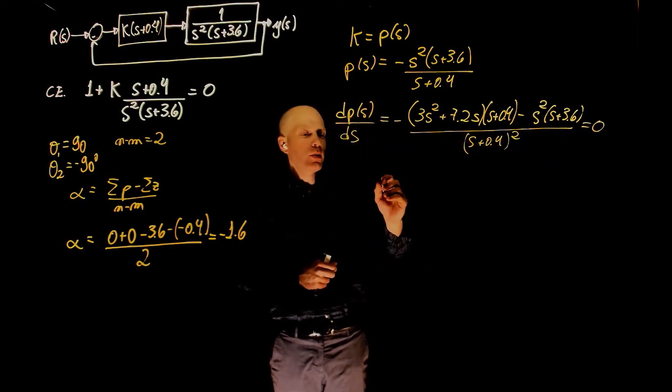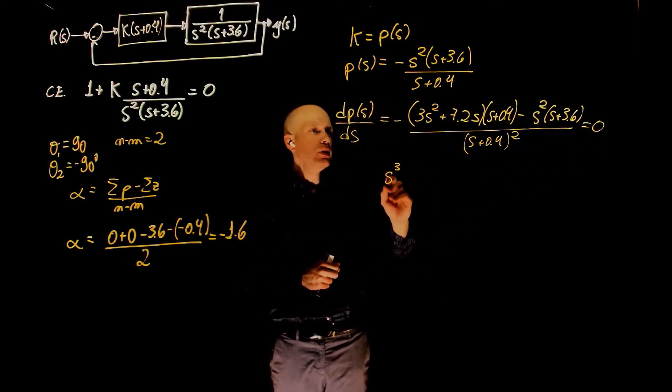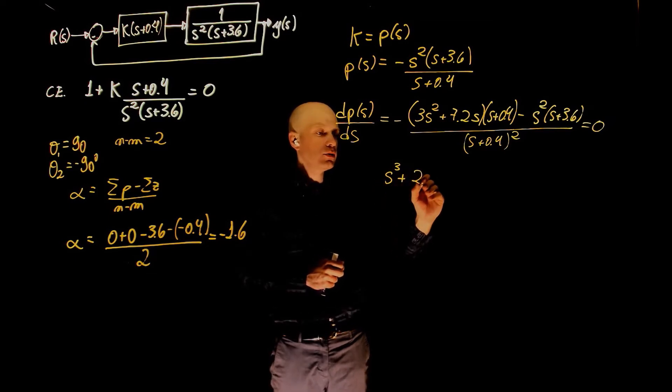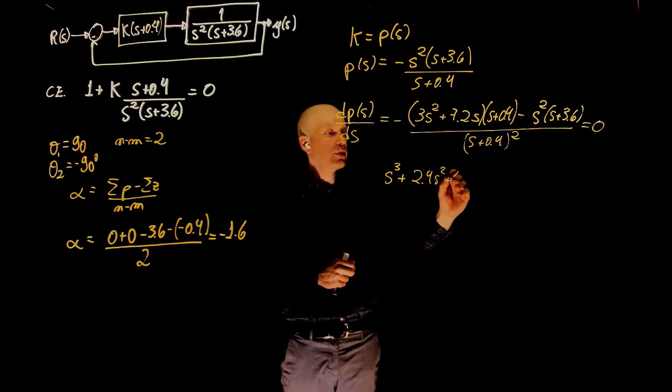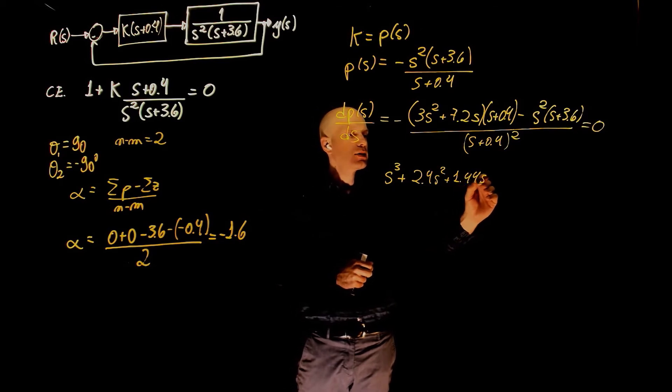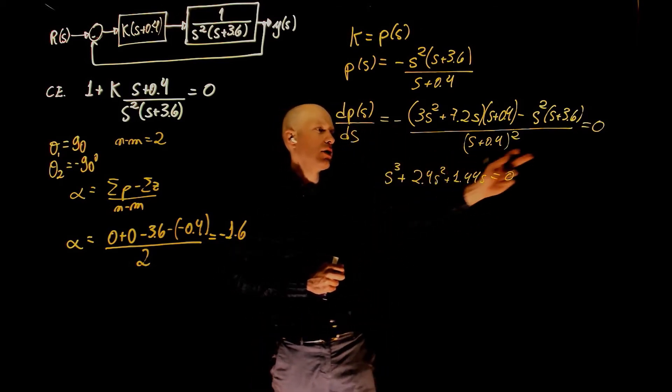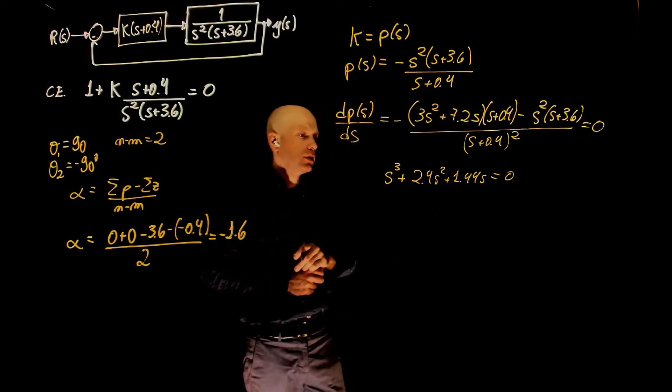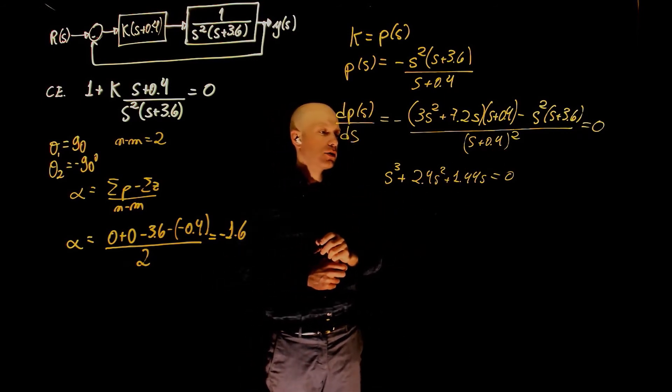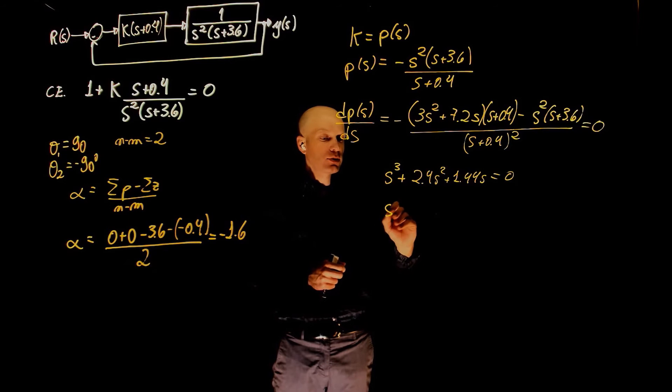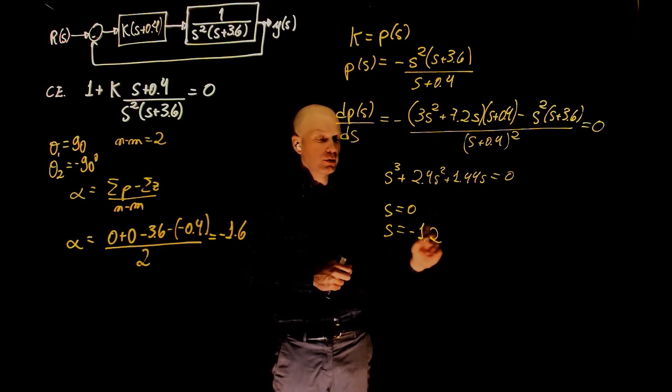Expanding the top of the equation, we get s to the power of 3 plus 2.4 s squared plus 1.44 s equals to zero. Of course, this all has that negative sign, but because you have zero on the other side, you can neglect it. Finding the roots of this third order polynomial will give s equals to zero, and s equals to negative 1.2, and s equals to negative 1.2.